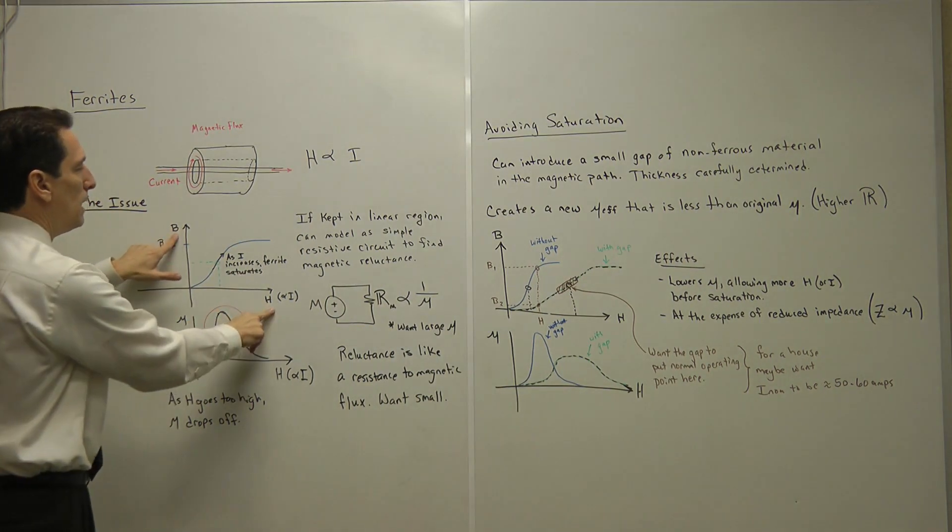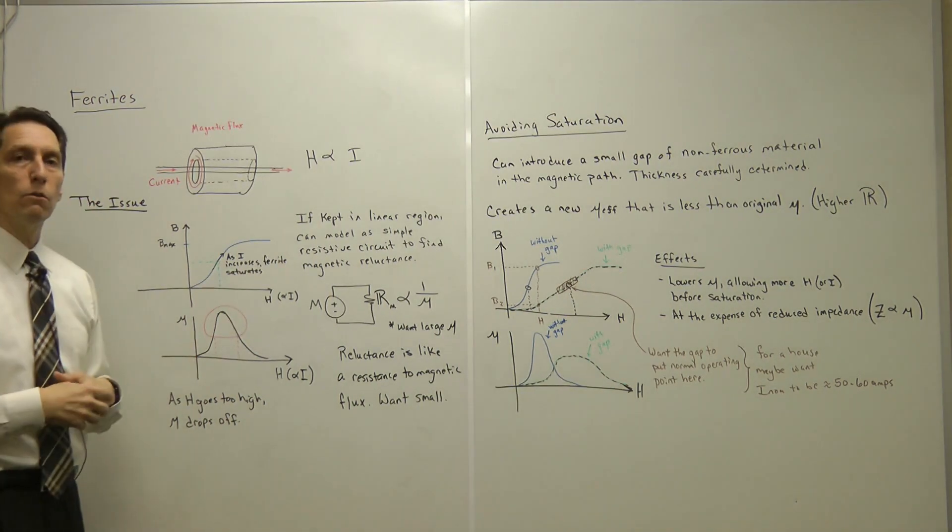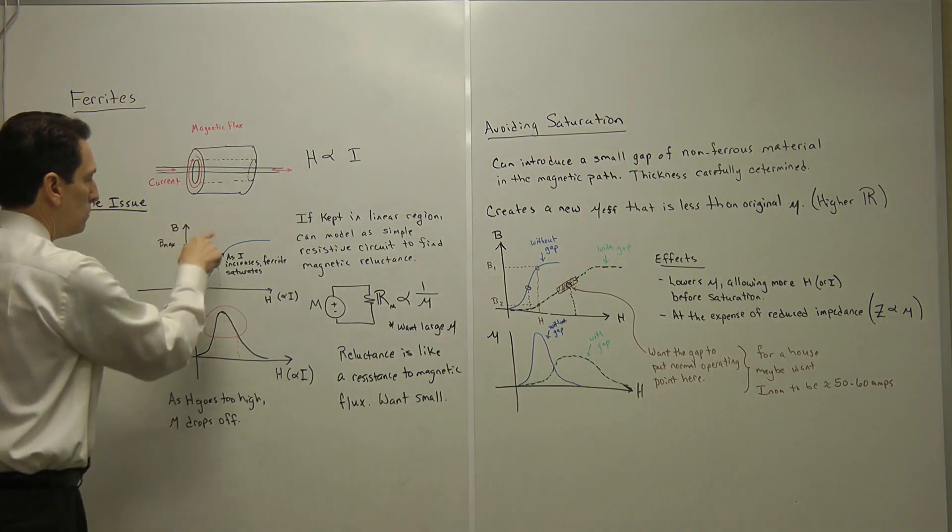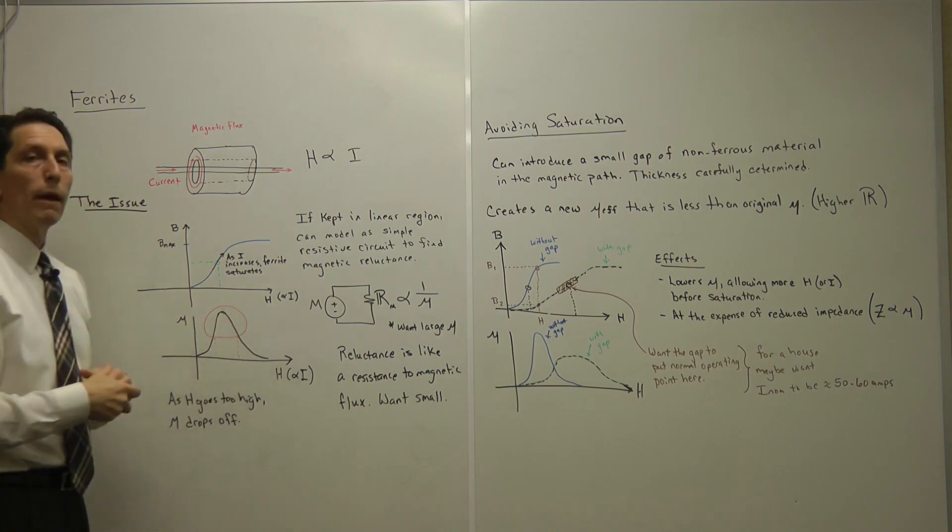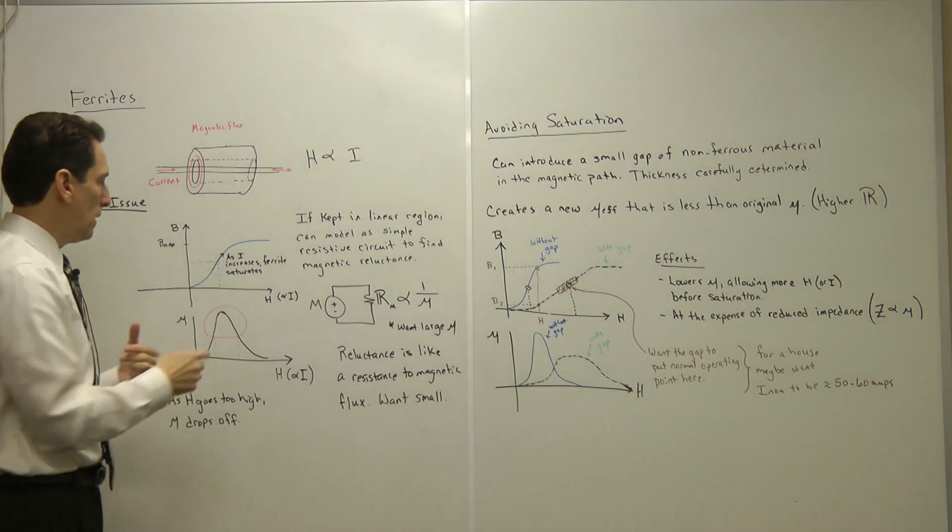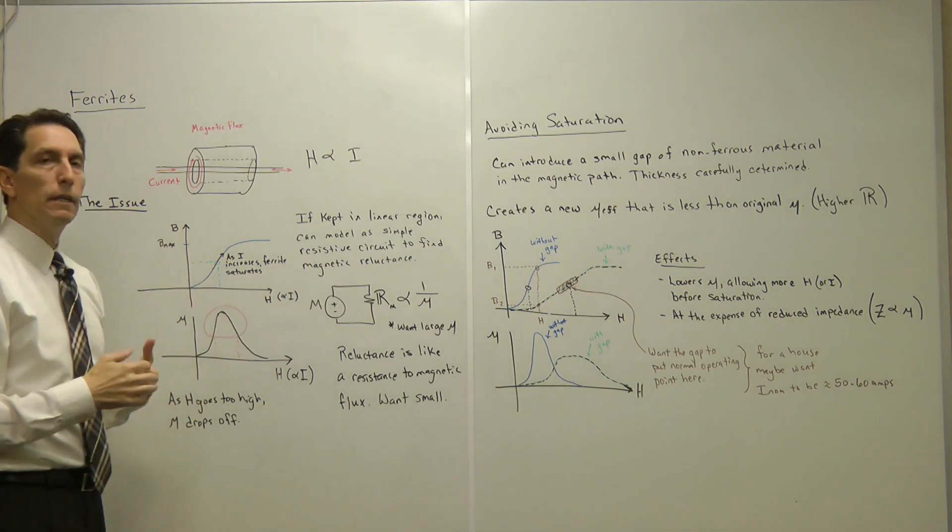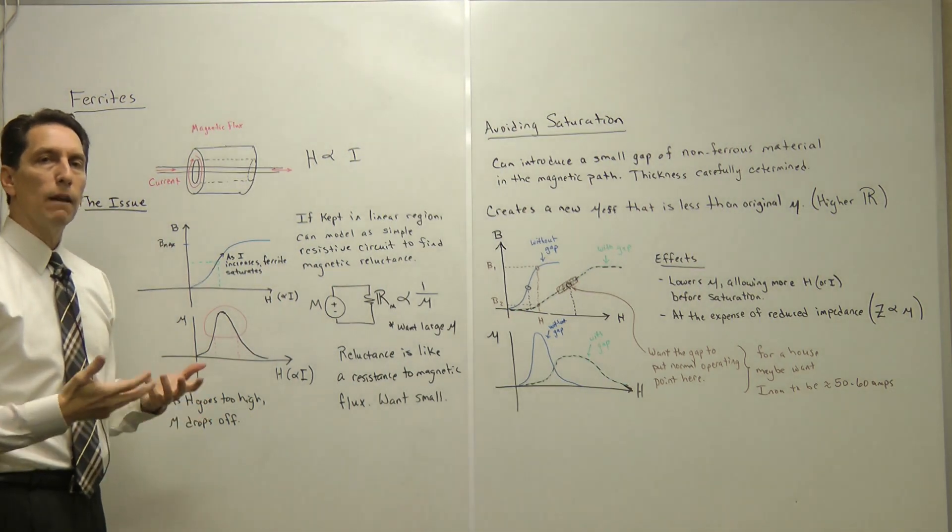If you extract the ratio of B to H, you'll come up with something called the permeability. They use the letter mu to denote that. If you just take each of those points and plot it, it'll look kind of like a little mountain. What it shows is that this region here where you have the highest slope is where you end up with the most permeability. That's the region that you'd like to operate in to get the optimal performance out of your ferrite.